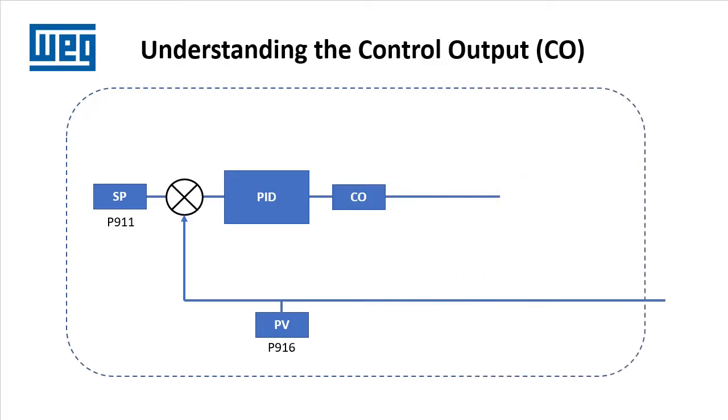The control output is always in percent and can be viewed in parameter 917. And that gets converted to the ultimate drive frequency which is in hertz and can be viewed in parameter 2.